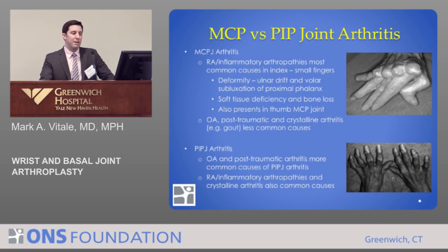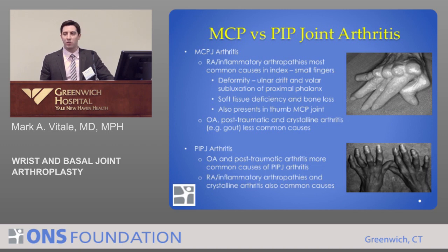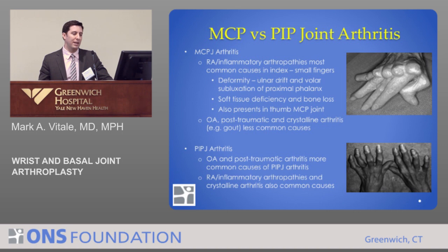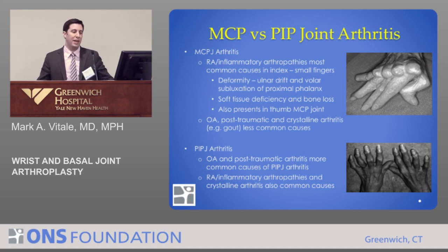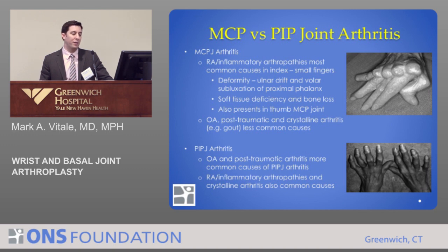MCP joint arthritis is seen most commonly in patients with rheumatoid arthritis or inflammatory arthritis — those are the most common causes of arthritis of the MCP joints in the index through small fingers. This is the classic deformity in a patient with severe rheumatoid arthritis: ulnar deviation, meaning the joints are pushed away from the hand, and volar subluxation of the joints. You can also see this in the MCP joint of the thumb.